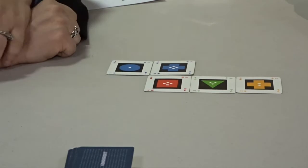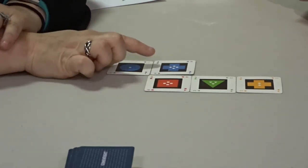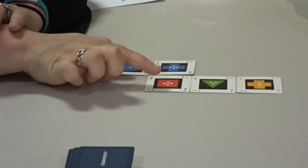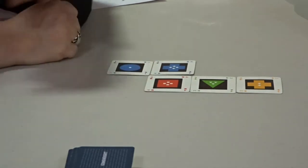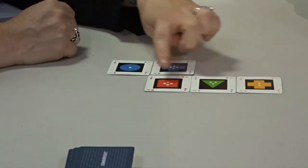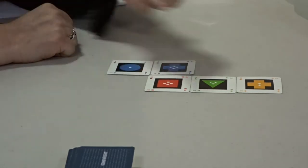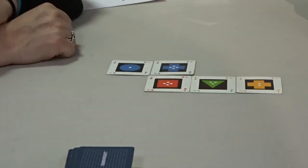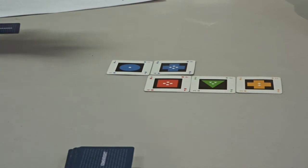This row will now be all fours, different colors and different shapes. And this row will have all of the characteristics different - different numbers, different shapes, and different colors.